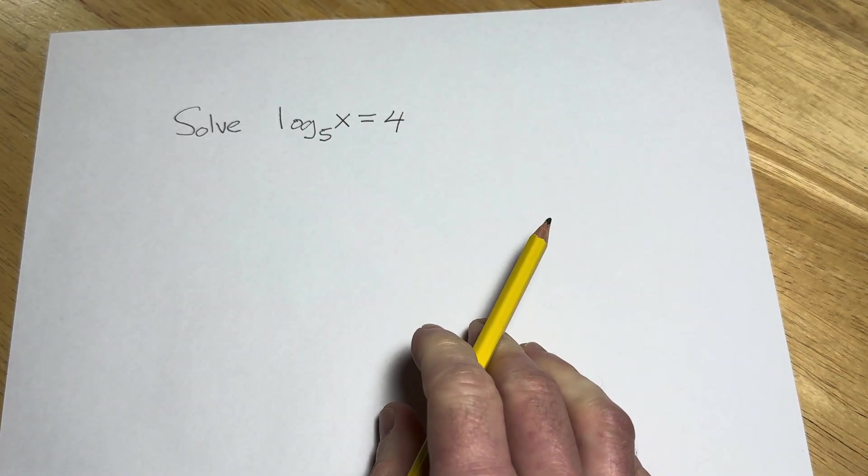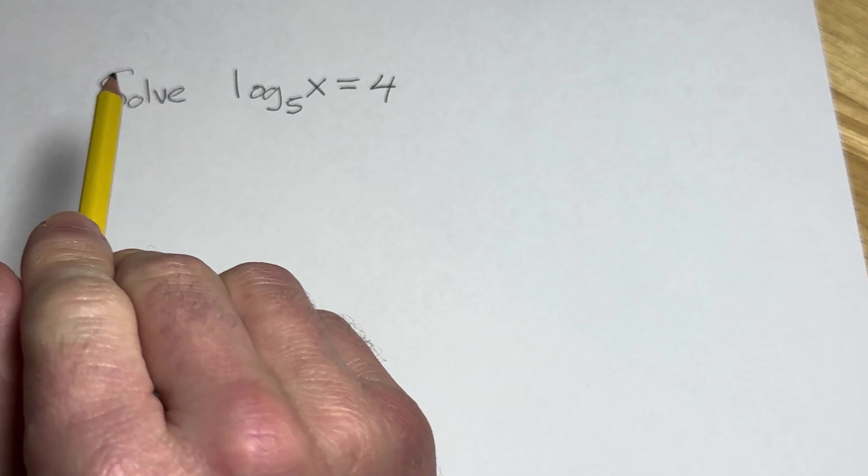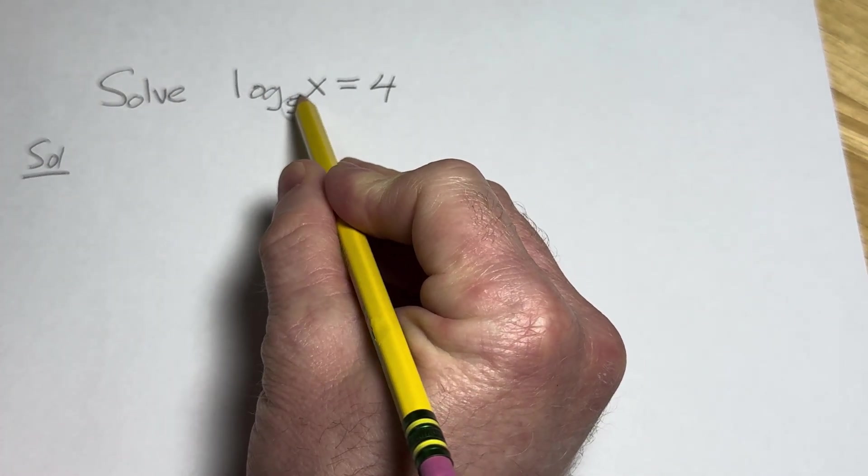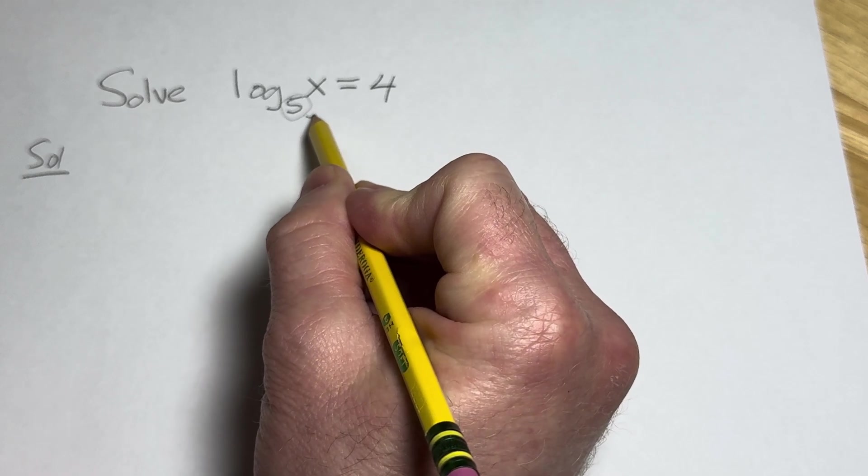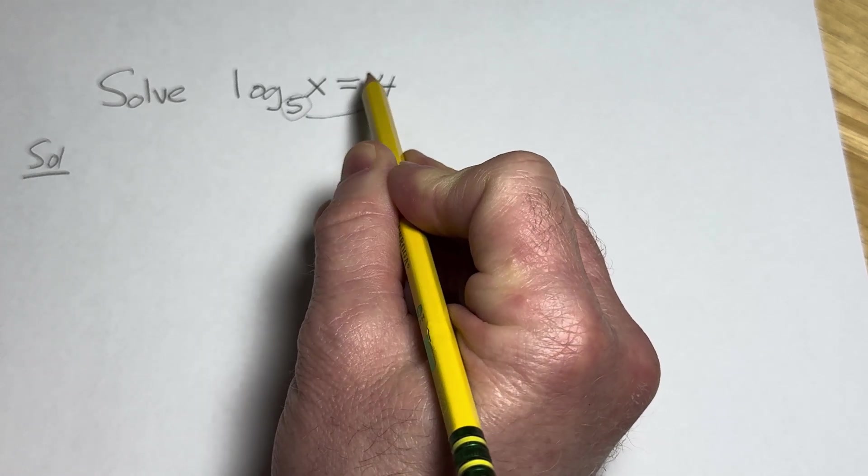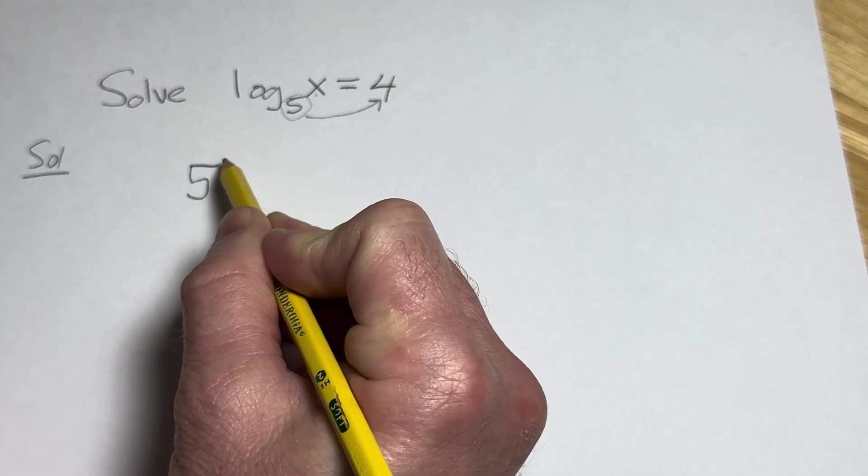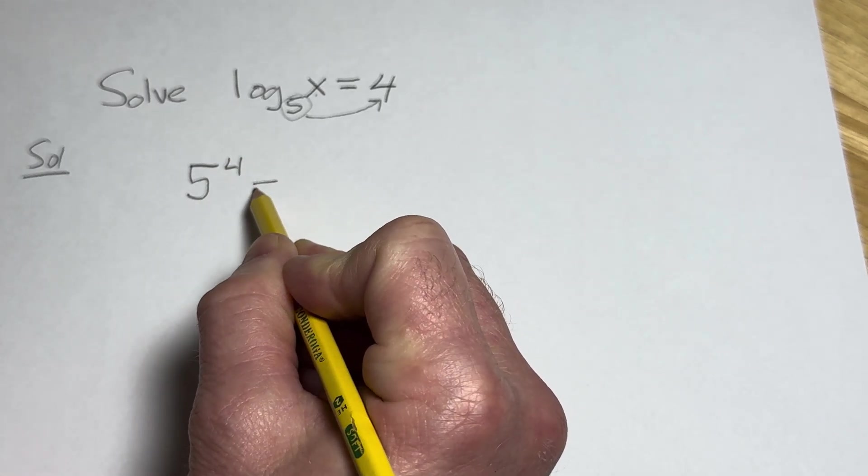To solve this logarithmic equation, you look at the base and say 5 to the 4th power equals x. So we write 5 to the 4th power equals x.